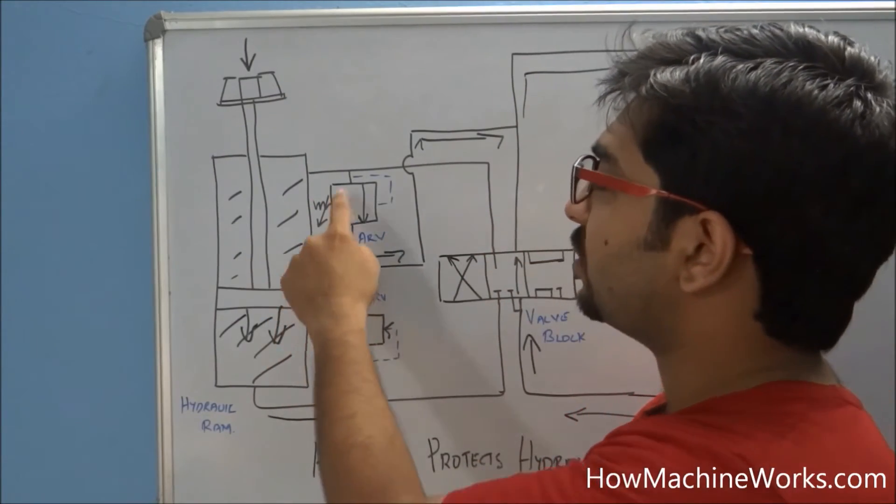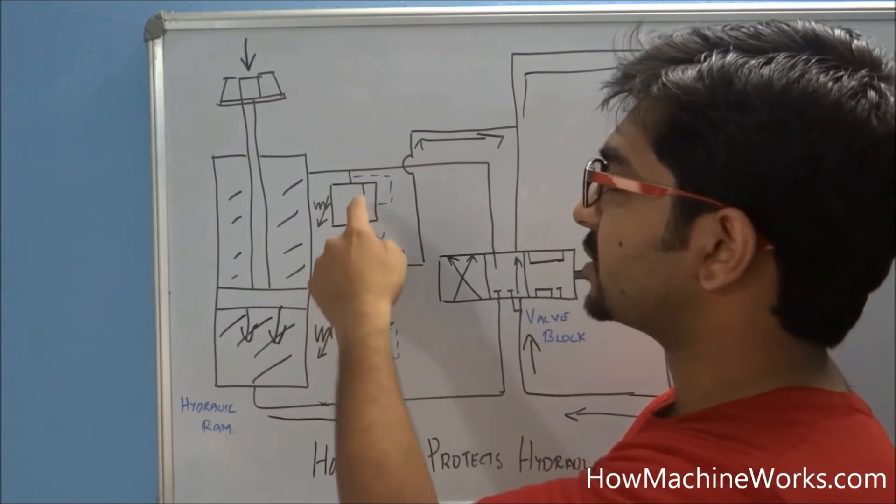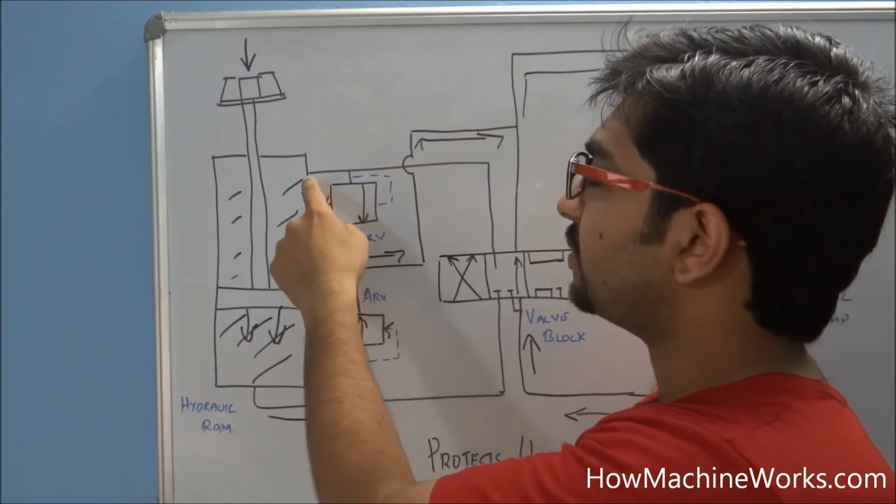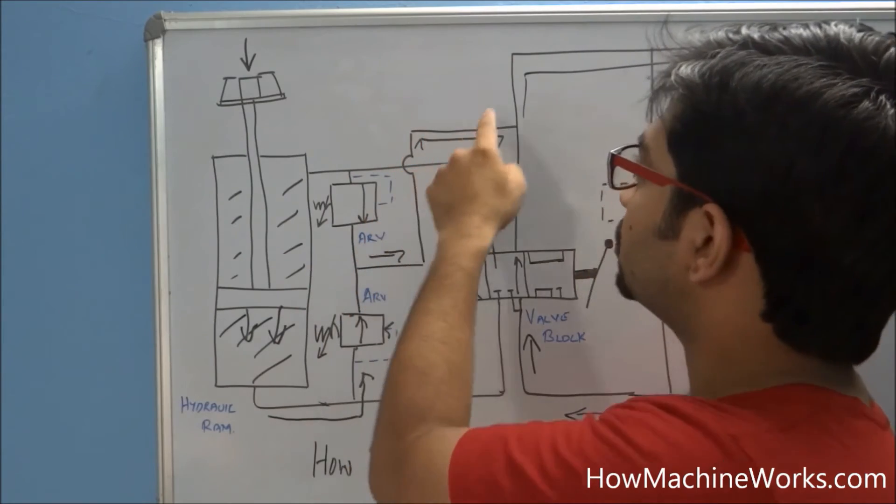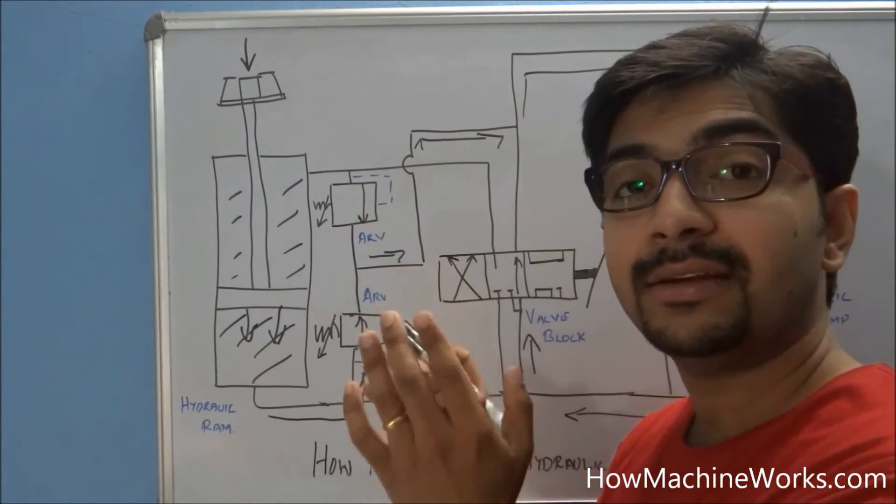The same is applicable towards the head side of the auxiliary relief valve. If excess pressure is happening there, that will be vented through this auxiliary relief valve and goes towards the return line, and the pressure is getting released.